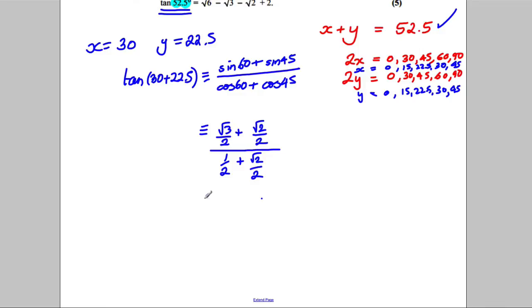Right, so let's keep going with this. Just dealing with the top first of all, this would be root 3 plus root 2 over 2, like that, and I'm dividing it by the thing on the bottom, so I'm going to change it to a divide here. I'm going to divide it by 1 plus root 2 over 2, like that.